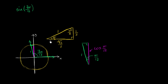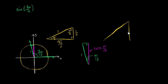We also know about 45-45-90 triangles — isosceles right triangles. If the hypotenuse is 1, then by the Pythagorean theorem, the length of each of the other two sides is √2/2. Instead of 45 degrees, we write these as π/4 radians.